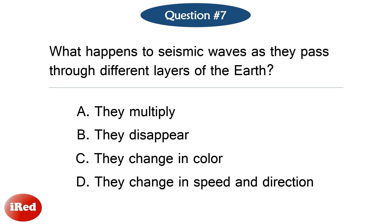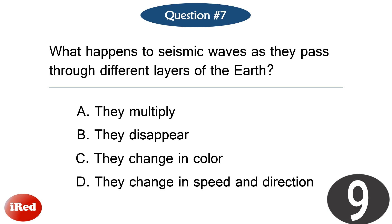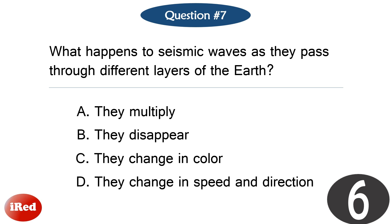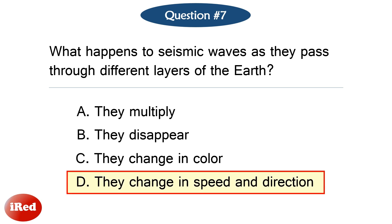Question number seven. What happens to seismic waves as they pass through different layers of the earth? The correct answer is letter D, they change in speed and direction.